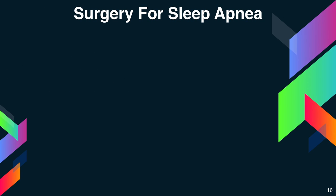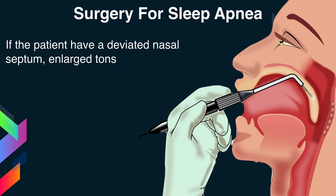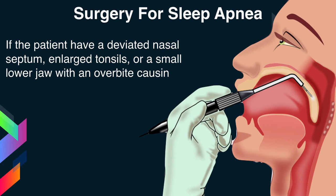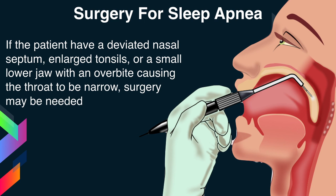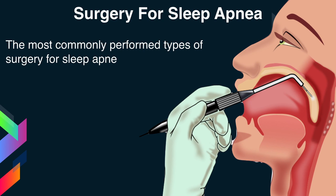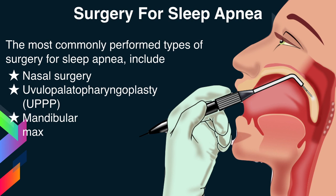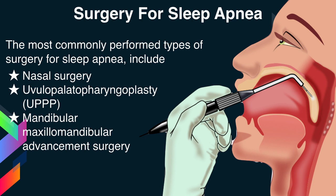Surgery for sleep apnea: If the patient has a deviated nasal septum, enlarged tonsils, or a small lower jaw with an overbite causing the throat to be narrow, surgery may be needed. Commonly performed surgeries include nasal surgery to correct nasal problems, uvulopalatopharyngoplasty (UPPP) — a procedure that removes soft tissue in the back of the throat — and maxillomandibular advancement surgery to correct facial problems or throat obstructions that contribute to sleep apnea.